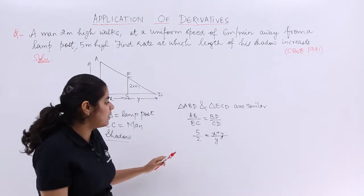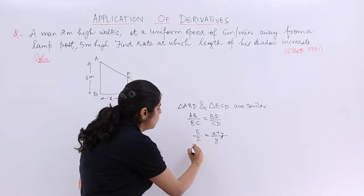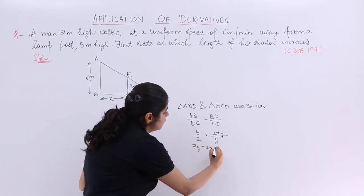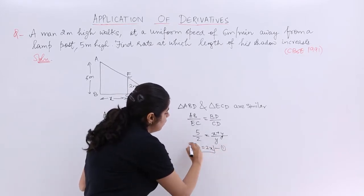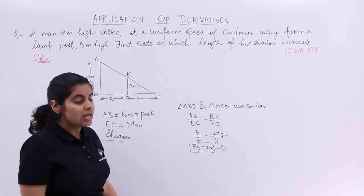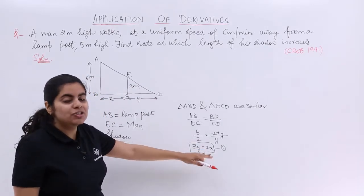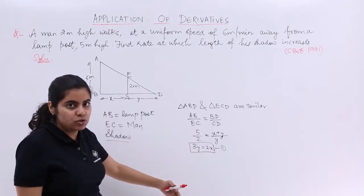Let's cross multiply. It gives me 5y minus 2y which is equal to 3y equals 2x. Let's name this as equation number 1 because it is of our interest. Now if I differentiate equation number 1, definitely I will get what I need to get, right?